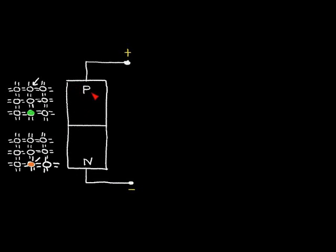Now let's consider what happens when we form a p-n junction. We take the p-type material and the n-type material and put them together. The p-type material has an excess of holes and has been doped with boron, while the n-type material has extra electrons and has been doped with phosphorus.